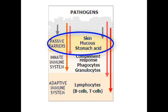Our first line of defense consists of passive barriers: our skin, our mucous membranes, and our stomach acidity, which inhibit the majority of pathogens from entering our system. The pH in our stomach is around 2, making it very acidic and creating a very unfavorable environment for microbes to survive. Our skin cells are also tightly placed next to each other, inhibiting many bacteria and viruses from entering.